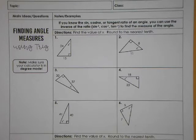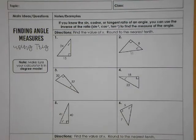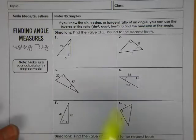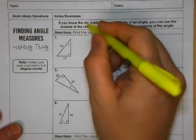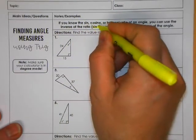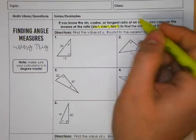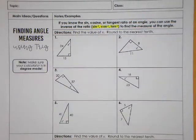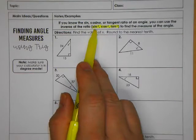In this video, we're going to be expanding on that. Now instead of using sine, cosine, or tangent to find a side length, we're going to use these ratios to find a missing or indicated angle. The way we're going to do that is with the inverse of sine, cosine, or tangent.